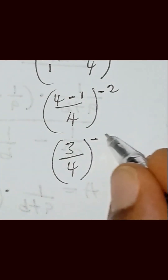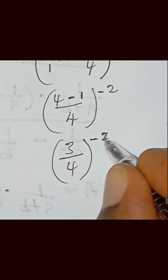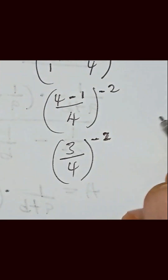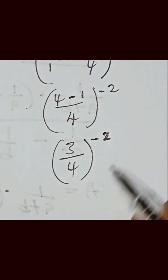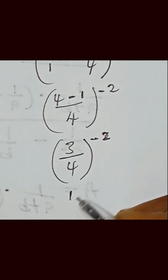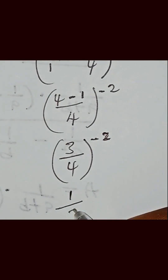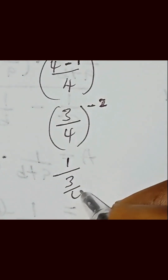Close the bracket raised to power minus 2. We can flip this by expressing it as 1 over 3 over 4, close the bracket, and this becomes positive 2.